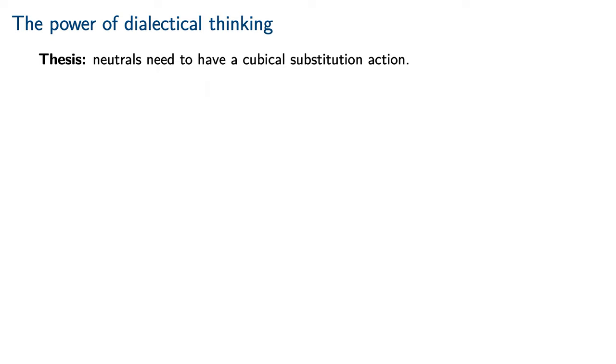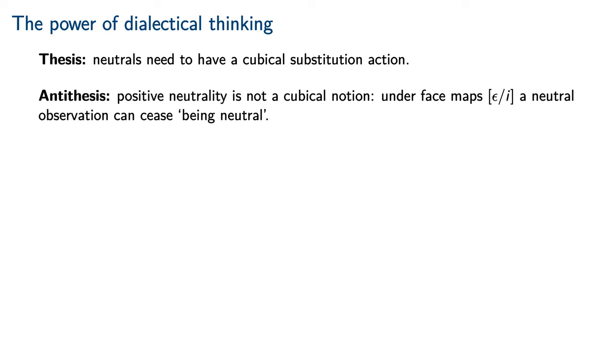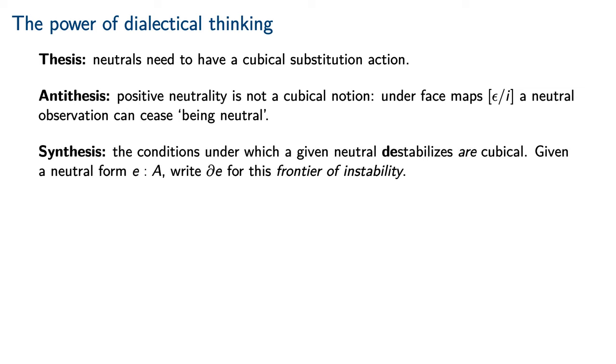Neutrals do need to have a cubical substitution action. However, our observations above indicate that positive neutrality is not actually a cubical notion. Under the face maps 0 for i and 1 for i, a neutral observation can cease being neutral.